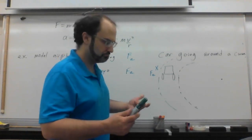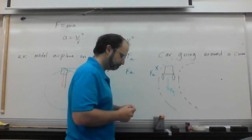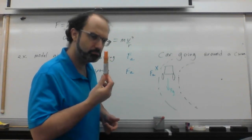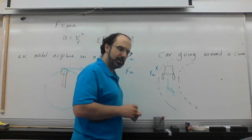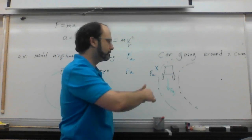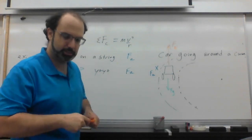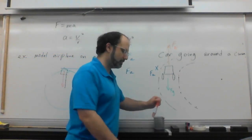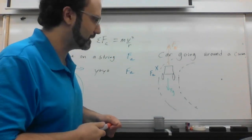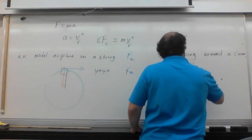Force of gravity points down — always. Force normal is perpendicular to the surface; the surface is flat ground, so force normal points up. We've run out of forces — there's literally only one force left. So guess which force is causing this object to go in a circle? It's going to be the force of friction.